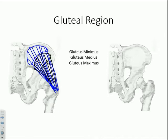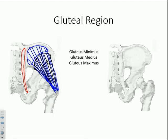The gluteus maximus makes up the superficial structure of the gluteal region — the buttocks. It comes off the outer surface of the ilium, as well as a large portion off the sacrum. In addition, it comes off the sacrotuberous ligament to a large extent, which you'll notice in lab. It has quite an extensive origin point, and it's not a very easy dissection — you'll actually have to strip it away from that ligament.